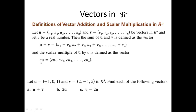Similarly, c times U equals (cu1, cu2, cu3, ..., cun). And as expected, U equals V if and only if ui equals vi for every i from 1 to n. There is really no difference in the definition of addition and scalar multiplication of vectors in the plane and in Rn.